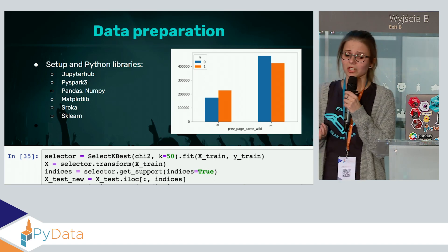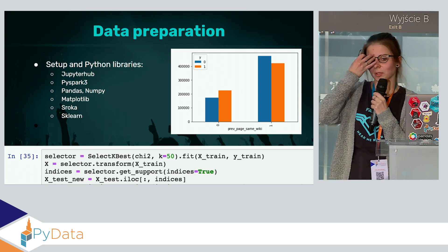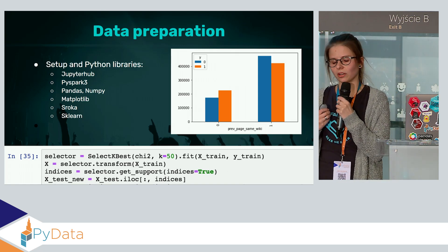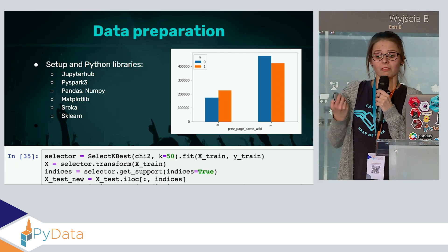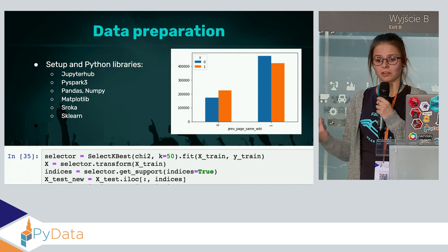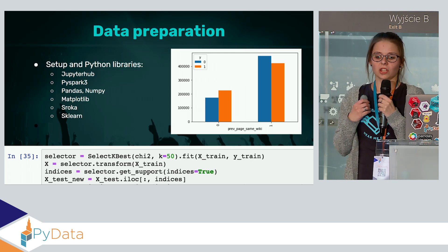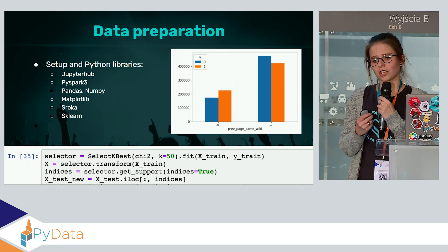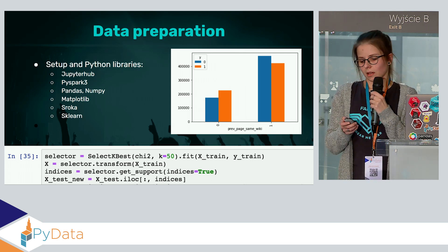The libraries we use for data preparation are not so different: again JupyterHub, PySpark, Pandas, Matplotlib for some visualization, and Stroka. But here you also see scikit-learn, because scikit-learn has a lot of helpful functions. For example, if you have thousands of features but want to focus on the hundred that seem best, and you want to exclude features that correlate with each other too strongly, there are many functions that are helpful for that.